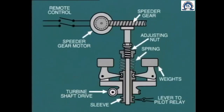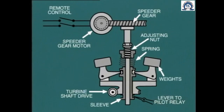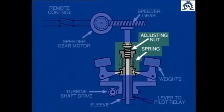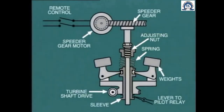Now let's take a closer look at the governor itself. This mechanical-type centrifugal governor is driven directly from the turbine shaft through a gear drive. As speed increases, the weights fly outward due to centrifugal force and lift the sleeve against the compression spring. The sleeve itself is connected to the pilot relay, which in turn adjusts the control valve through the hydraulic servo mechanism. We can adjust the set point of the governor by adjusting the compression on the spring. The adjusting nut moves up or down according to rotation of the screw thread. This action can be performed manually at the turbine.